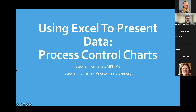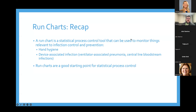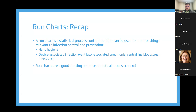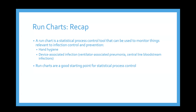To recap, today we're going to look at run charts. Run charts are a form of statistical process control that are very basic and very simple. They're a good starting point because you don't need a lot of points to start a run chart and they don't assume any sort of distribution. The run charts will only look at the median of whatever your outcome is. You could use run charts for hand hygiene compliance, or for hospital-associated or device-associated infections.